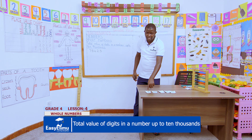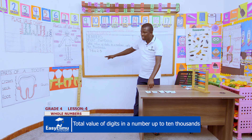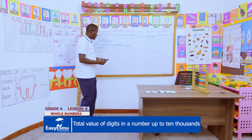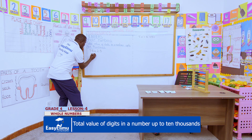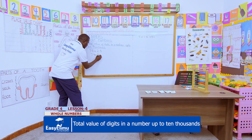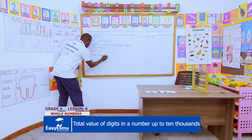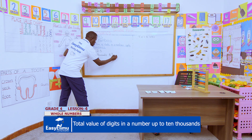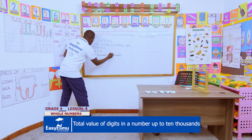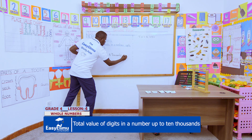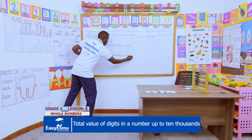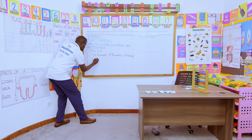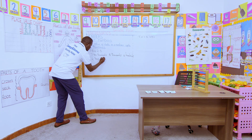Let us write the place values on the board. We have seven in the place value of ten-thousands, eight in the place value of thousands, four in the place value of hundreds, two in the place value of tens, and five in the place value of ones.